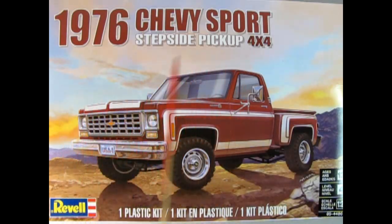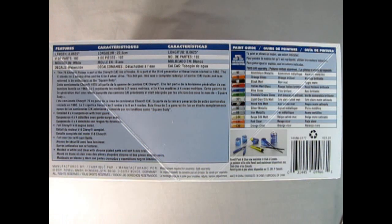The 1976 Chevy Sport Stepside Pickup Truck 4x4 includes one plastic model kit for ages 12 and up, skill level 4. This is a 1:24 scale model kit. This side of the box shows details of the model kit including the length of 8 inches, number of parts is 102, molded in white with water slide decals.